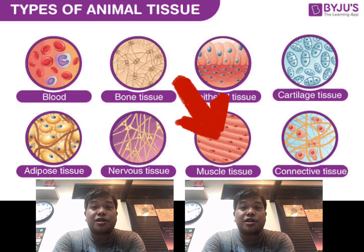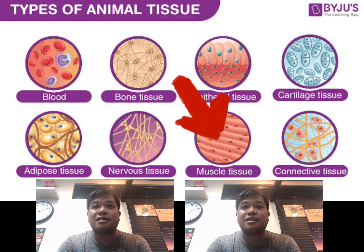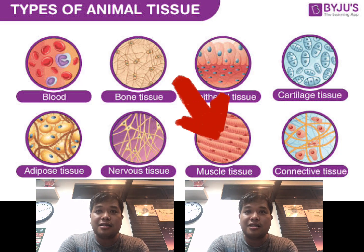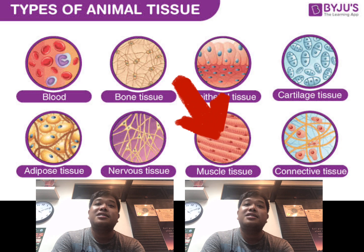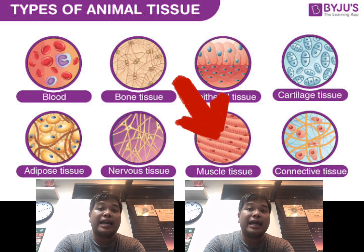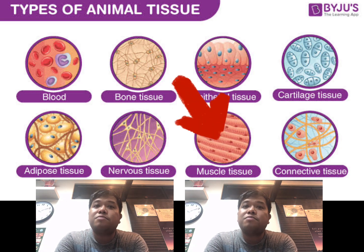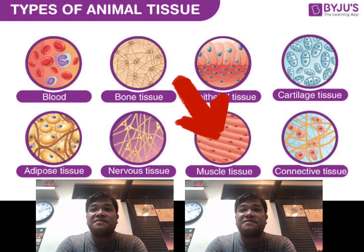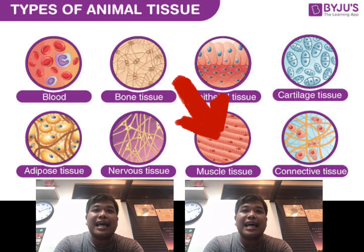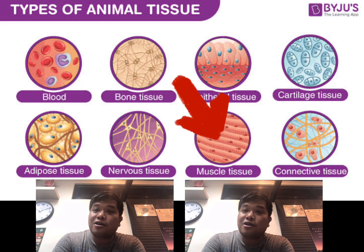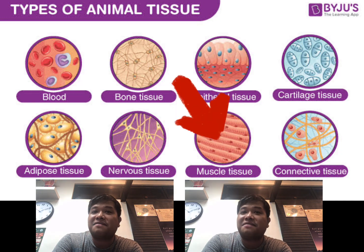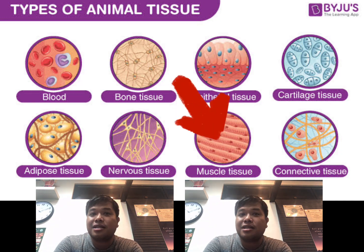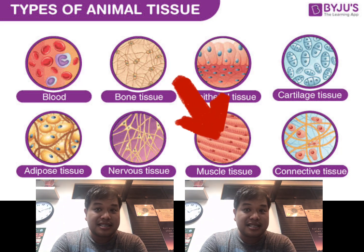The muscle tissues are composed of muscle cells which are designated for contraction and movement. This includes skeletal muscles, smooth muscle tissue, and cardiac muscle. They are also called muscle fibers. The inside of the muscle cell consists of sarcoplasm, the sarcolemma known as the cell membrane located at the cytoplasm of the muscle cell, and the cell body that contains the nucleus located at the center of the cell.